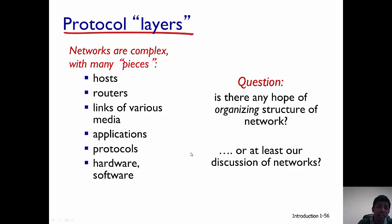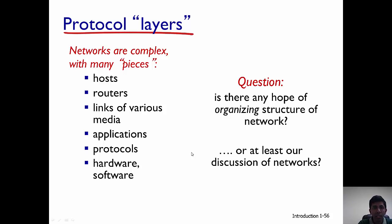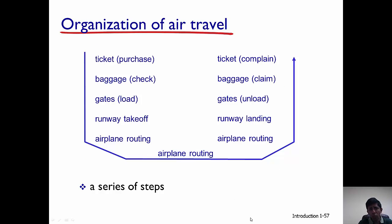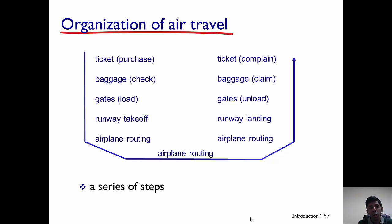In the transport layer, there is additional header information that is added — and that's why we are studying this course. The transport layer message has a specific name. Let's look at an example. Think of air travel, where additional headers are added at each step. It's a complex task, but it's easy because it's organized in layers.